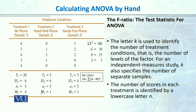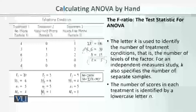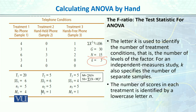First of all, we have to calculate the number of treatment conditions, that is the number of levels of the factor. We have three conditions, which means k equals 3. Our total sample size N is 15.